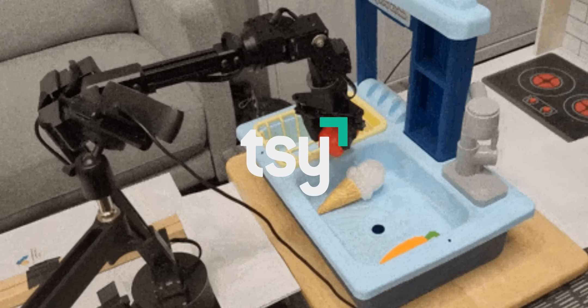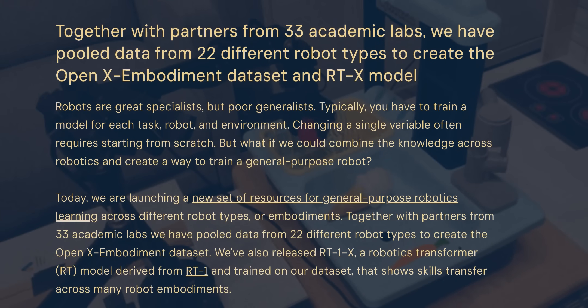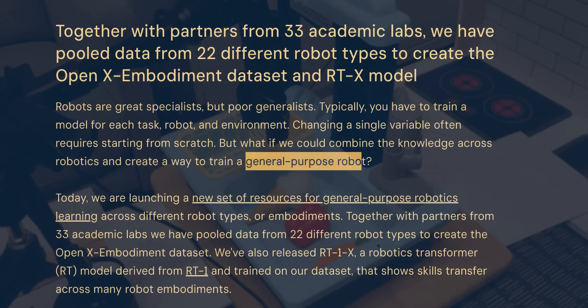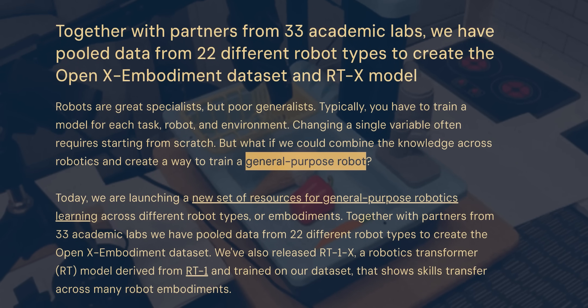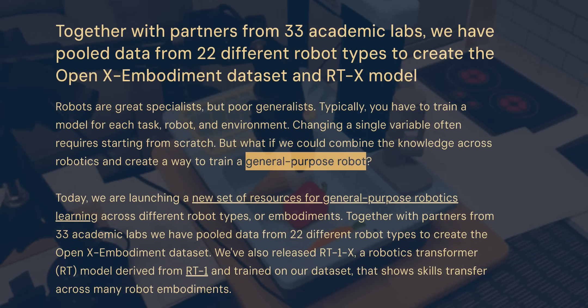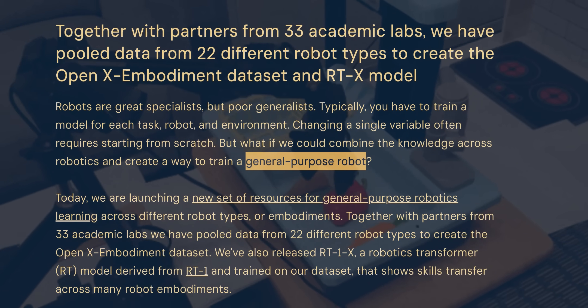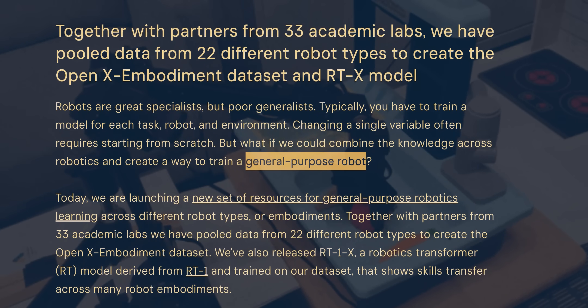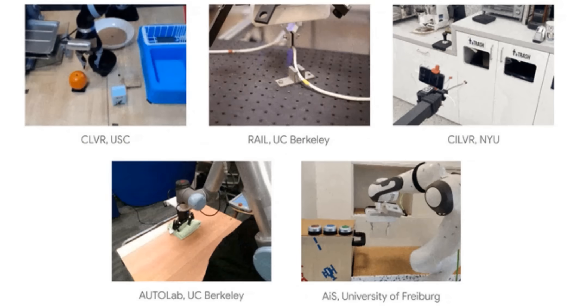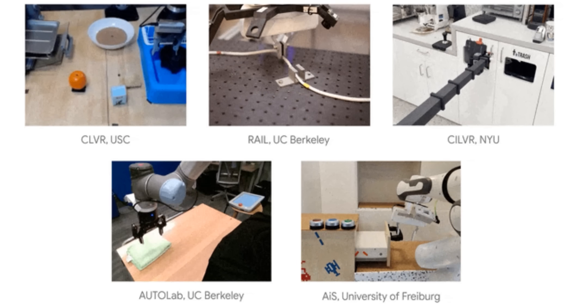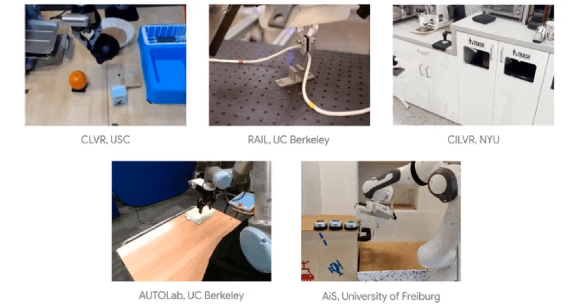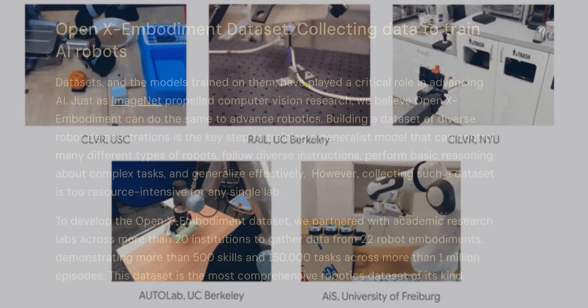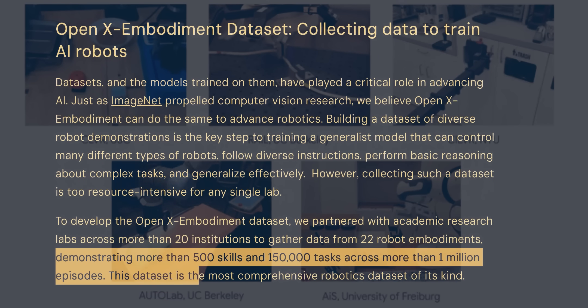Earlier this month, Google DeepMind released a paper showing that you can make a general-purpose robot by training it with data from a wide variety of other robots doing different kinds of tasks. Google partnered with 33 academic labs to collect data from 22 different form factors of robots, also called embodiments. Then, they used that data to create a massive library of training data called the OpenX embodiment dataset, as well as an AI model called RTX.